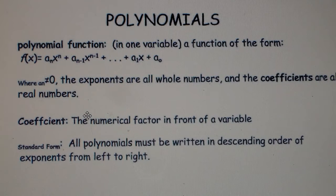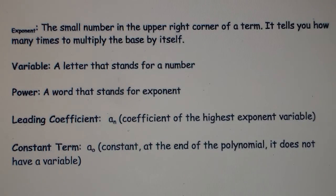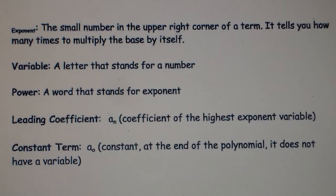Coefficients are all real numbers — you can't have any non-real or imaginary numbers. The coefficient is the numerical factor in front of the variable. Standard form means all polynomials must be written in descending order of the exponents from left to right. The exponent is the small number in the upper right-hand corner of the variable — it tells you how many times to multiply the base by itself. A variable is a letter or symbol that stands for a number or a person, place, or thing. The power is a word that stands for exponent.